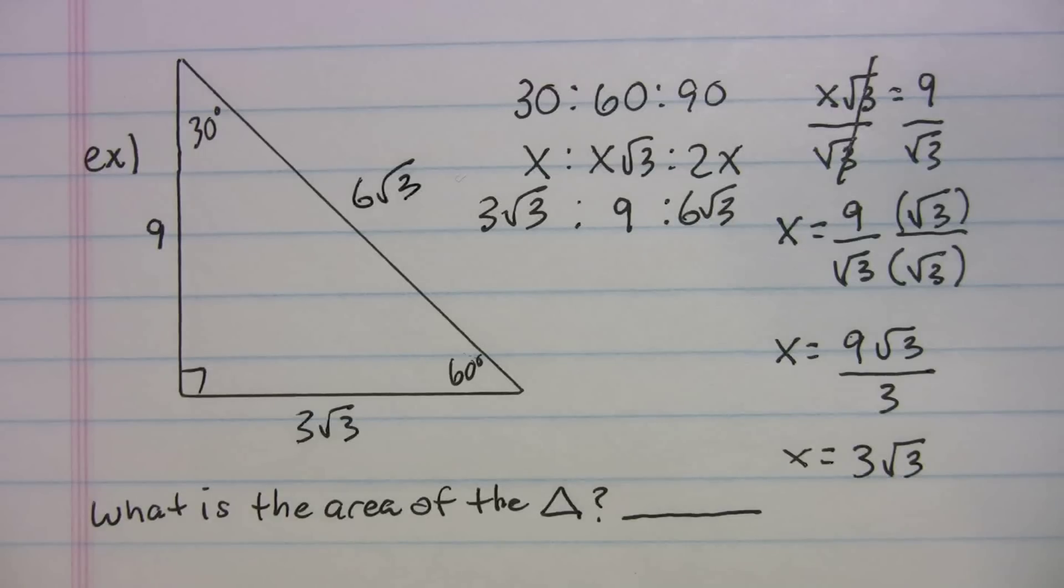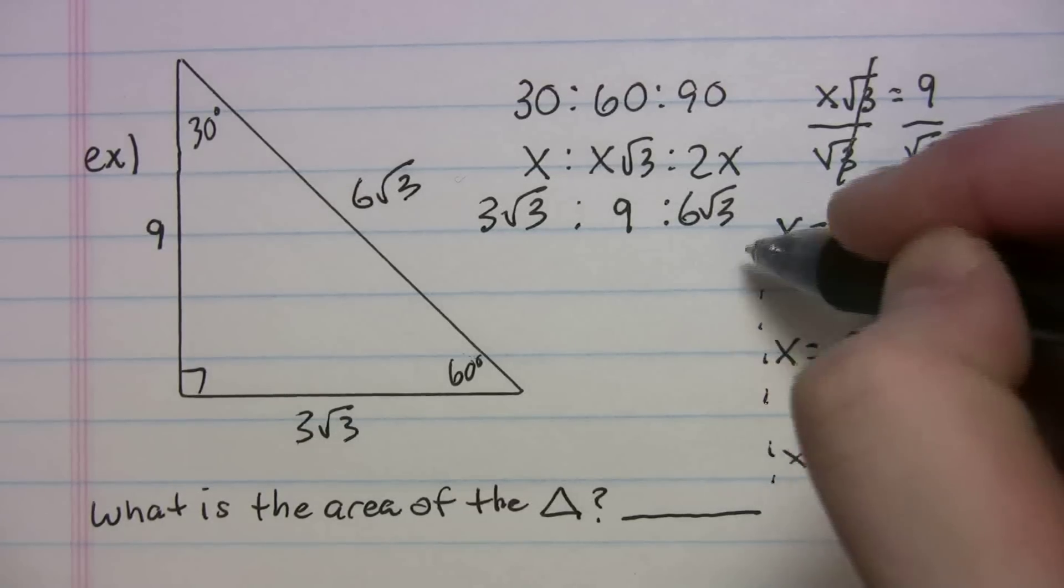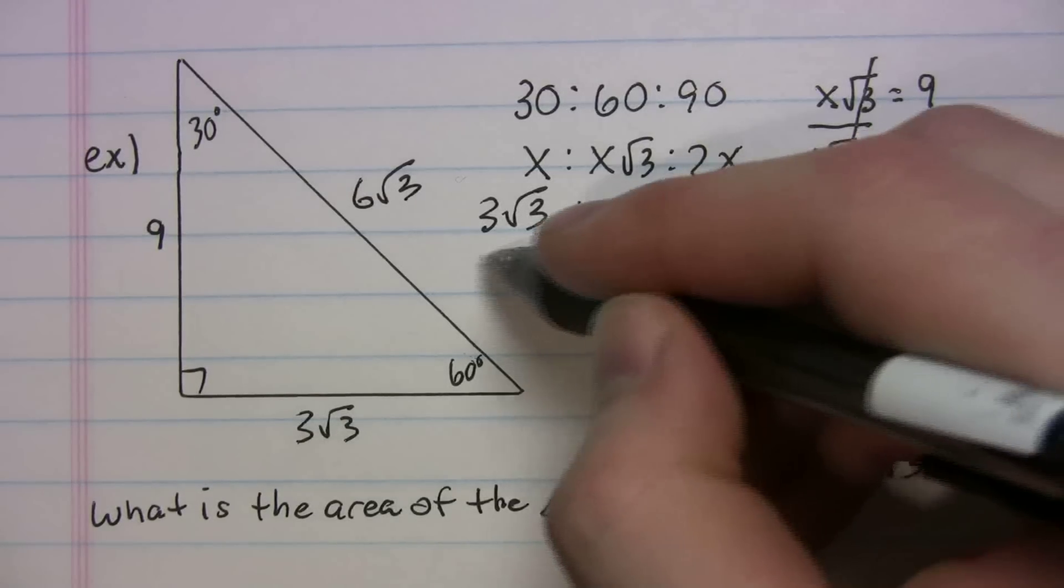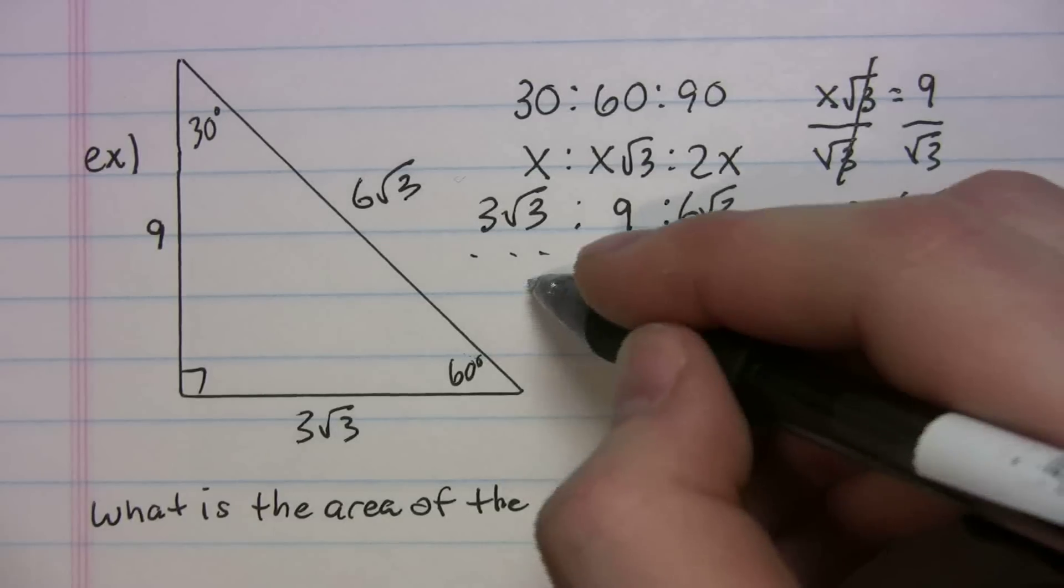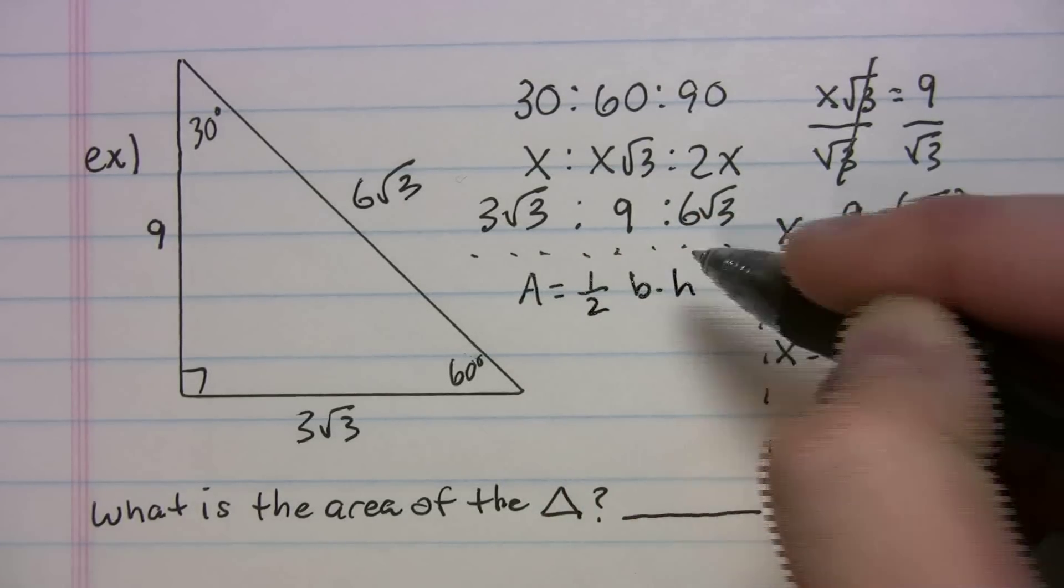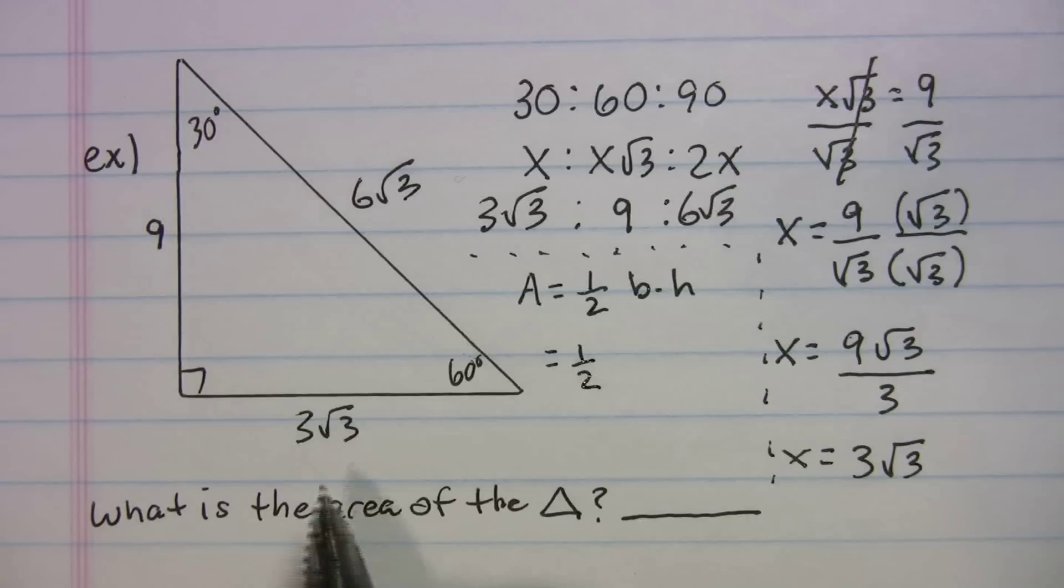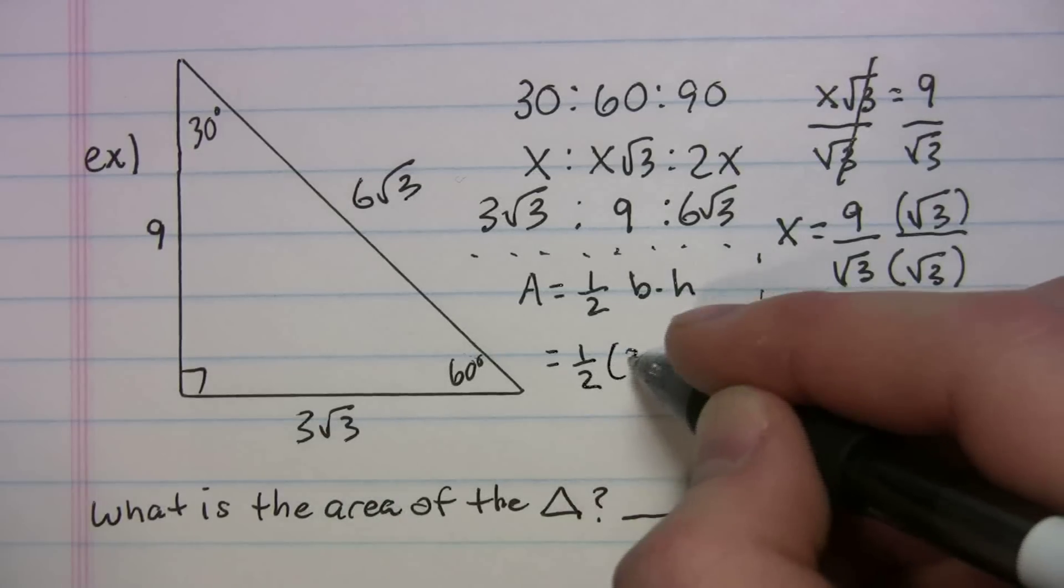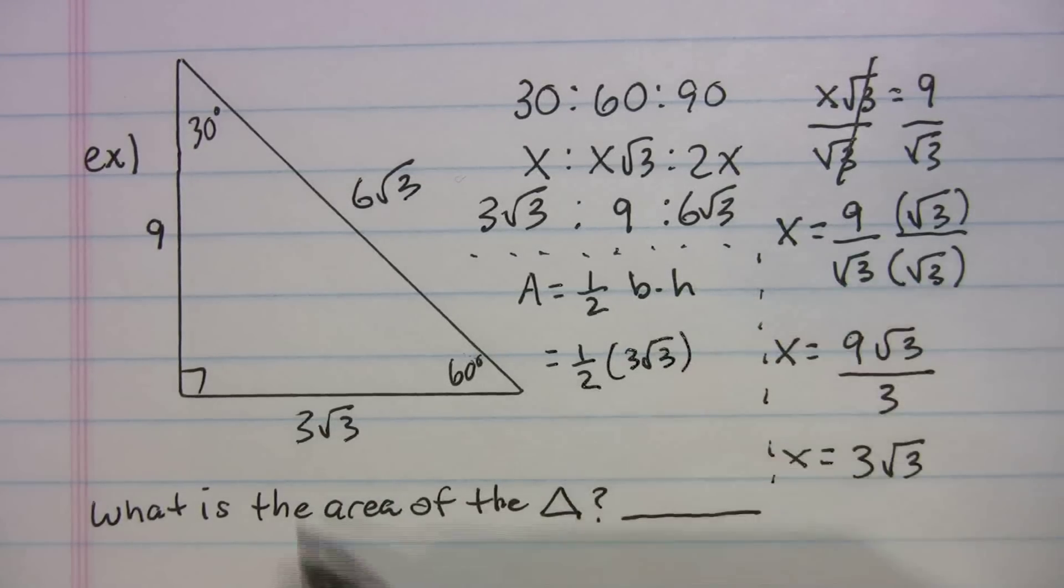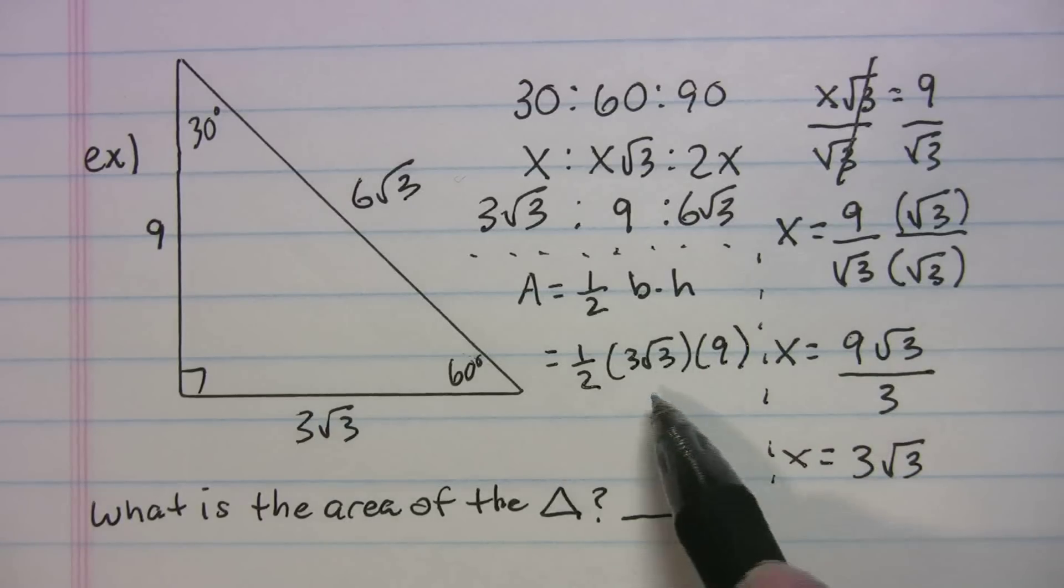And what does this problem want to know? It wants to know what is the area of the triangle? So I'm running out of space here. It's going to get a little cramped, but let me see if I can fit the work in right over here. So what do we know is the area? Area is 1 half base times height. So let's plug in what we know. 1 half, what's our base? 3 radical 3. Our height is 9.